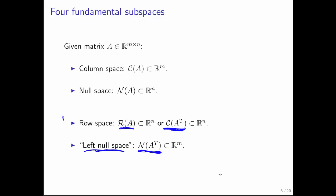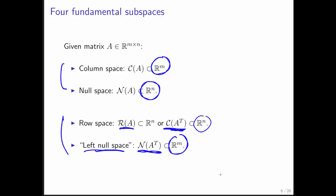Notice that these come in pairs. The column space is in Rm, and so is the left null space. The null space is in Rn, and so is the row space.